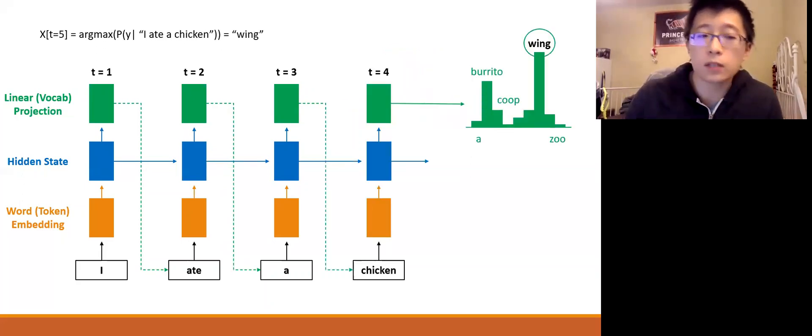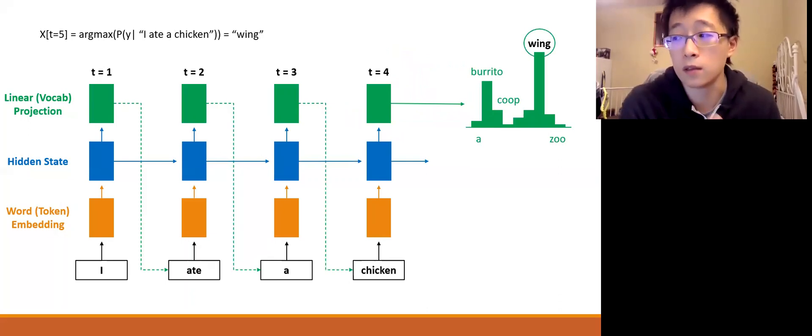And then finally, given that our context now at the fourth time step is I ate a chicken, our model says the most likely next word is wing. So our sequence in the sum total is I ate a chicken wing.